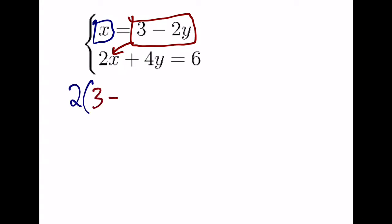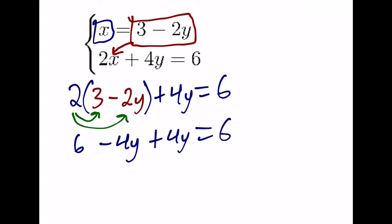2 multiplied by 3 minus 2y plus 4y is equal to 6. Everything in that equation remains the same except for x is replaced or substituted for. From here, we're going to distribute this positive 2, which gives us 2 times 3 is 6. 2 times a negative 2 is a negative 4y plus 4y is equal to 6. Combining like terms, we have a positive 4y and a negative 4y. They go away, so we get 6 equals 6.